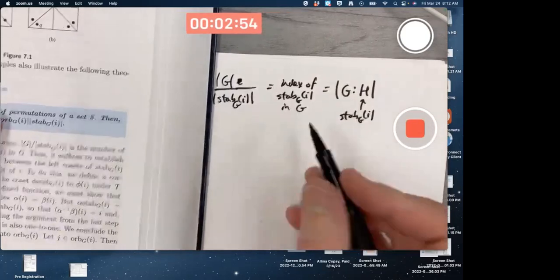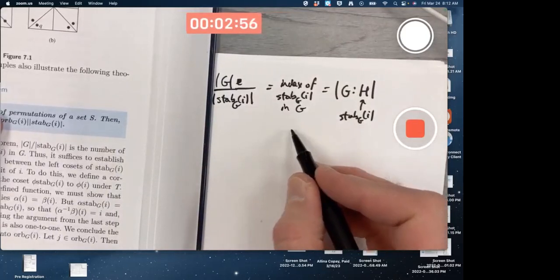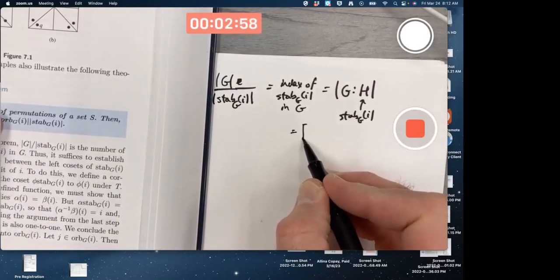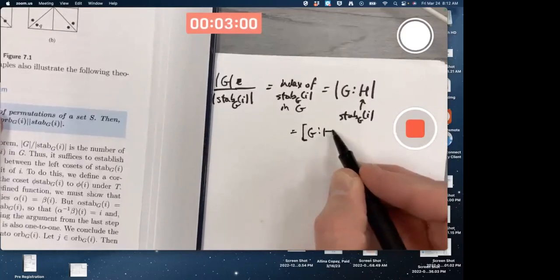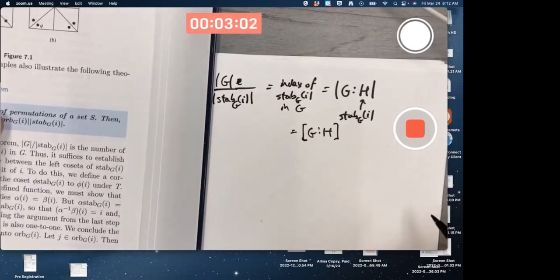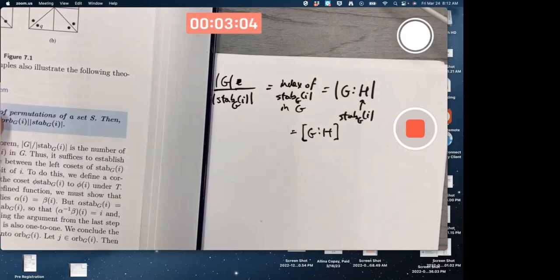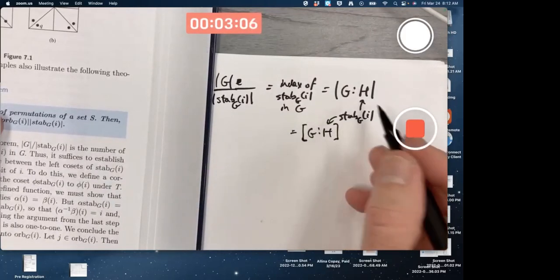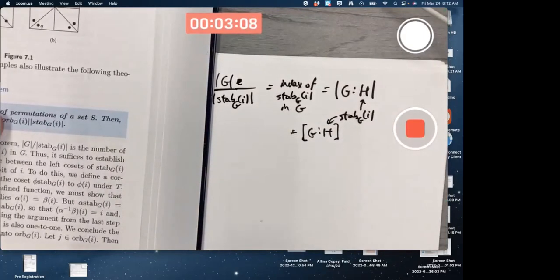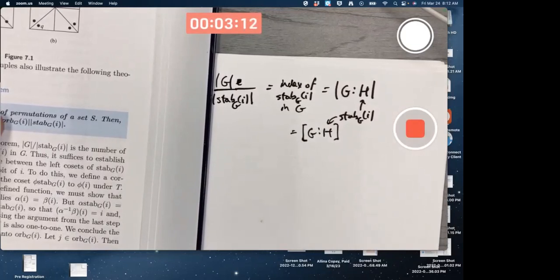I will tell you, other books make it a little different. They make it more like brackets, like this. Okay, but our book writes it like that. The index, by definition, is just the number of left cosets, which, by the way, is the same as the number of right cosets.